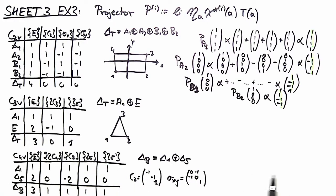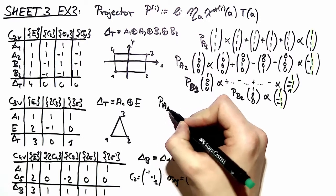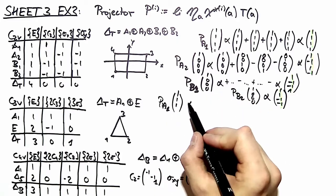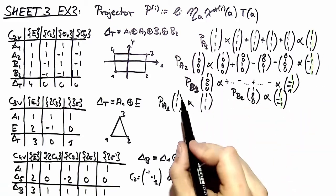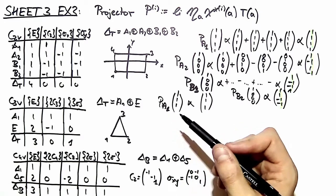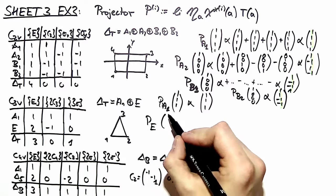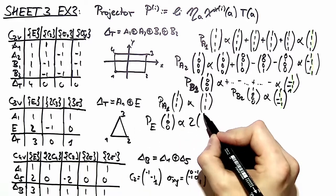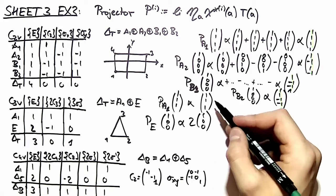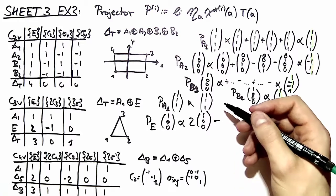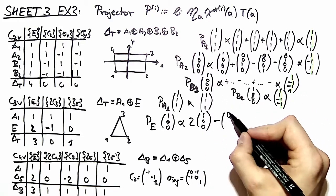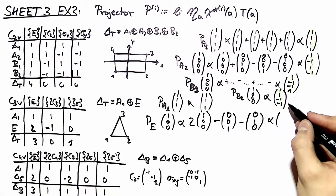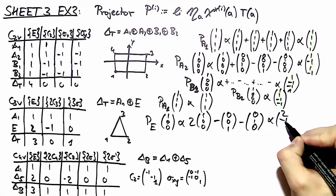Let's do it a little quicker for the next one. We act again with the projection operator of the identity representation on a vector which is always one. This yields, with the same calculation as above, that this vector is indeed the basis for the identity representation. Now let's move on to the E representation. We take again the vector which is one at position one and see how it transforms. We take two times the identity, then with character minus one — the rotation in one direction moves the one to the bottom and the other rotation moves it the other way. So we see that this is proportional to (2, −1, −1).